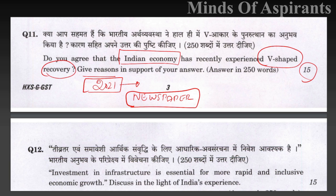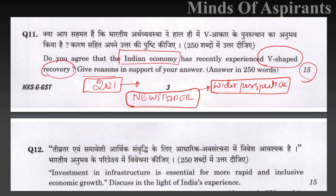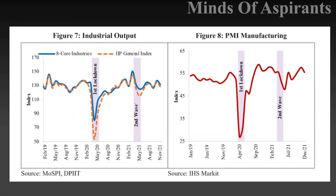Just mugging up points from any material is easier — I do agree it is easier to replicate the same points and write. But reading newspapers gives you a much wider perspective. Every day you will encounter some issue that gives you an understanding of how this V-shaped recovery happens.